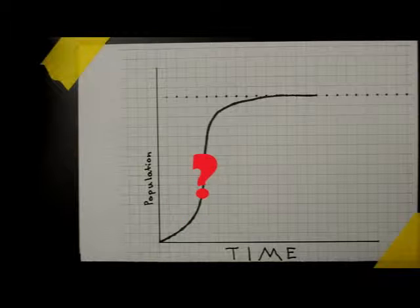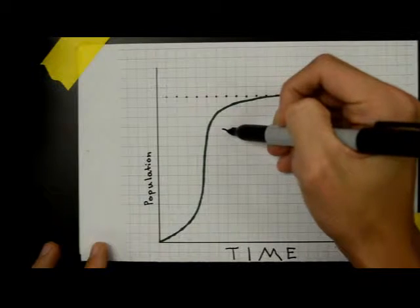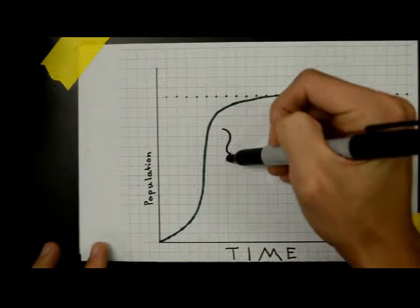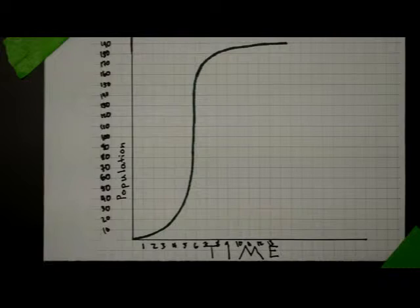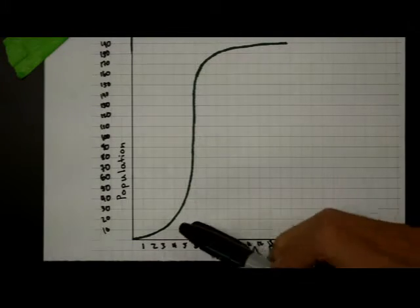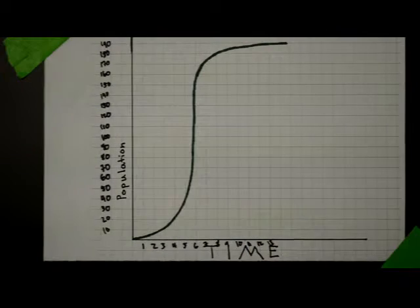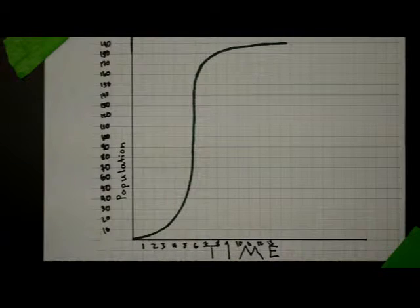The question then becomes when, during the growth of your population, do you want to harvest to maximize your yield? While not entirely obvious, the best time to harvest is during the vertical growth phase of your population. Let's take a closer look. If we look at these two sections of the graph, one early on and one as the population approaches carrying capacity, we'll notice that they have similar slopes.